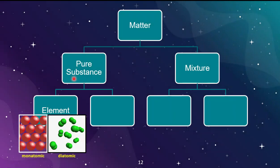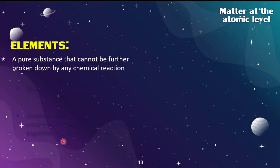We'll start by looking at elements. Elements can exist in nature as monatomic or diatomic. The di- prefix in diatomic indicates the presence of two atoms chemically bonded together, versus monatomic where there's only one atom and no chemical bond. In pictures, overlapping shapes indicate a chemical bond. An element is defined as a pure substance that cannot be broken down any further by a chemical reaction, and most elements on the periodic table exist as monatomic.